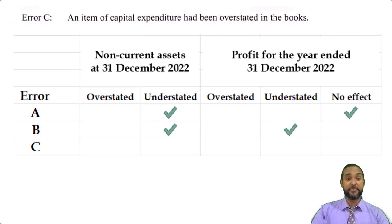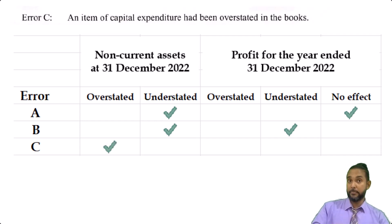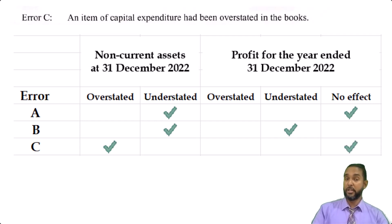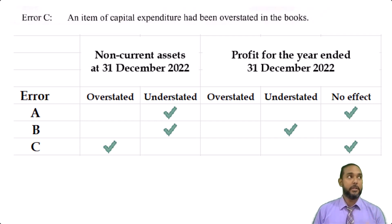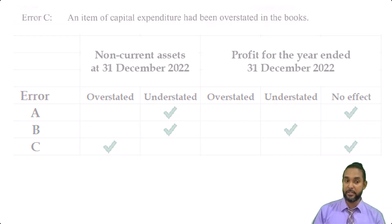The last item is Error C — an item of capital expenditure has been overstated. If you overstate capital expenditure, the effect on non-current assets is that it is overstated. And following on from the example they gave us for Error A, it means there's no effect on the profit for the year. Again, if the non-current assets are overstated and you calculate depreciation on that figure, your depreciation expense would be too high and your net profit would be understated — but I don't think that's what they were going for.